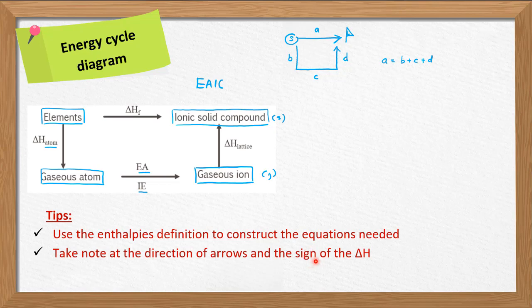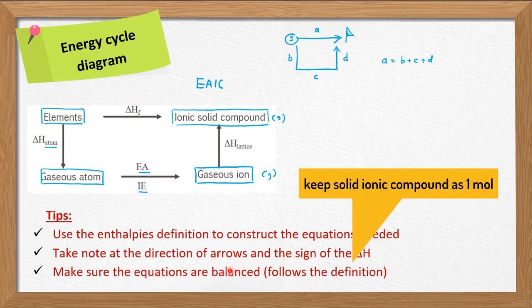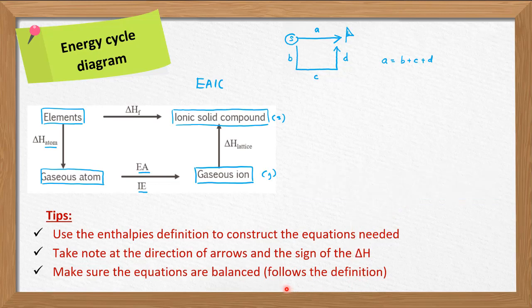That means from positive into negative or from negative into positive. And the last tip: make sure the equations are balanced — balanced in the sense that you follow the definition. Which species you need to keep as one mole, and then adjust the remaining species so that the whole equation is balanced. There is a requirement for balancing.